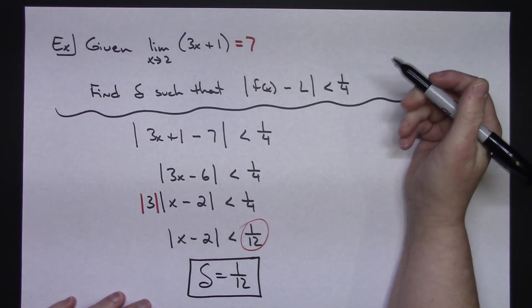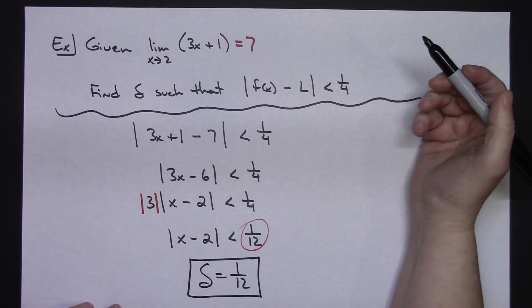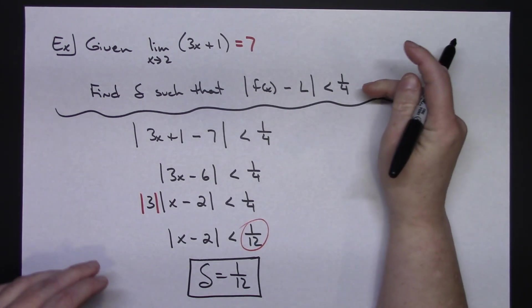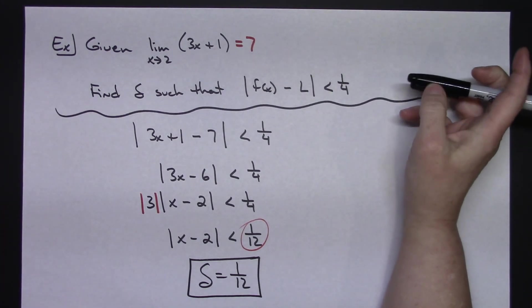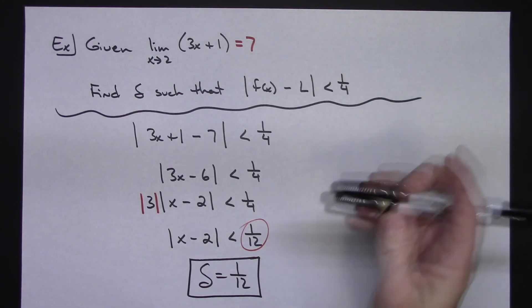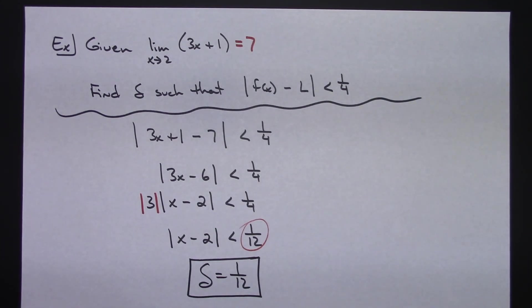So that's just one example, one type of problem of how you could use that epsilon-delta definition of a limit to find delta when you are given a certain epsilon. Thanks for watching, and if you found the definition helpful, then go ahead and give me a thumbs up, and be sure and share with your friends. Thanks.